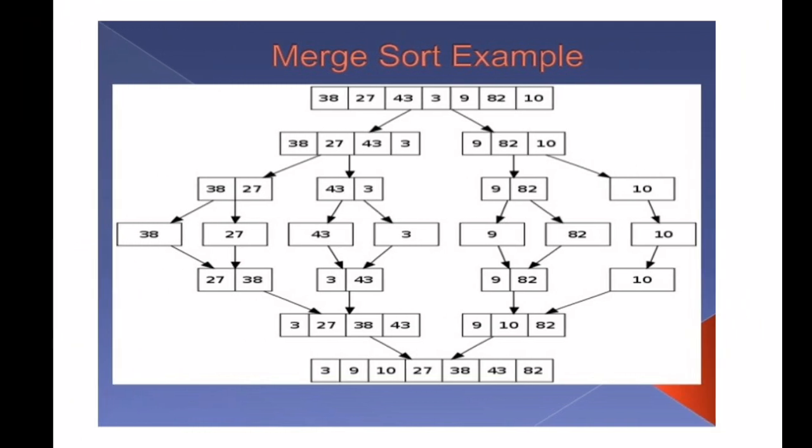I am going to combine the values. Just combine the two elements by sorting. Which one is the smallest value? 27, 38, 3, 43, 9, 82, 10.